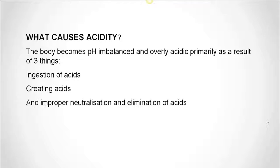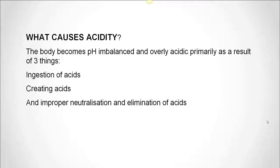The second cause is creating acids. Microbes such as anaerobic bacteria, yeasts, and fungi proliferate when your body becomes acidic. These pathogens and microbes also create acidifying toxins in your body, which add to the problem. And the third cause — improper neutralization and elimination — is when your body's buffering acid system becomes depleted or compromised, acids then begin to build up and damage all systems within your body.